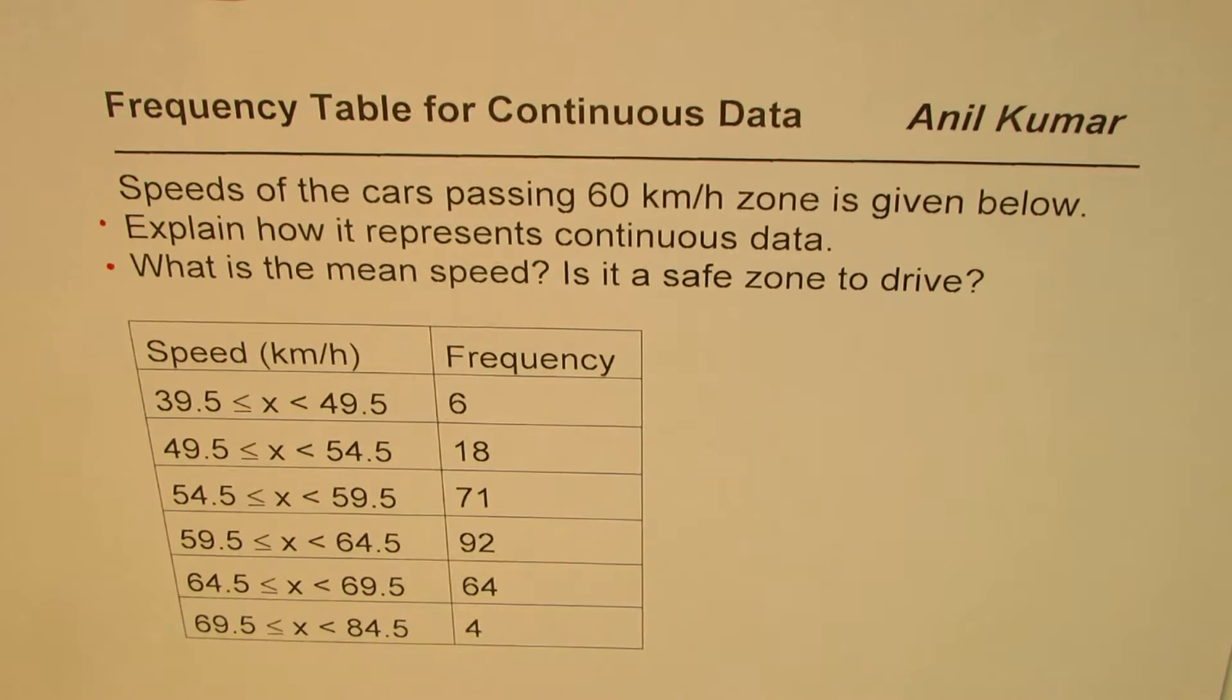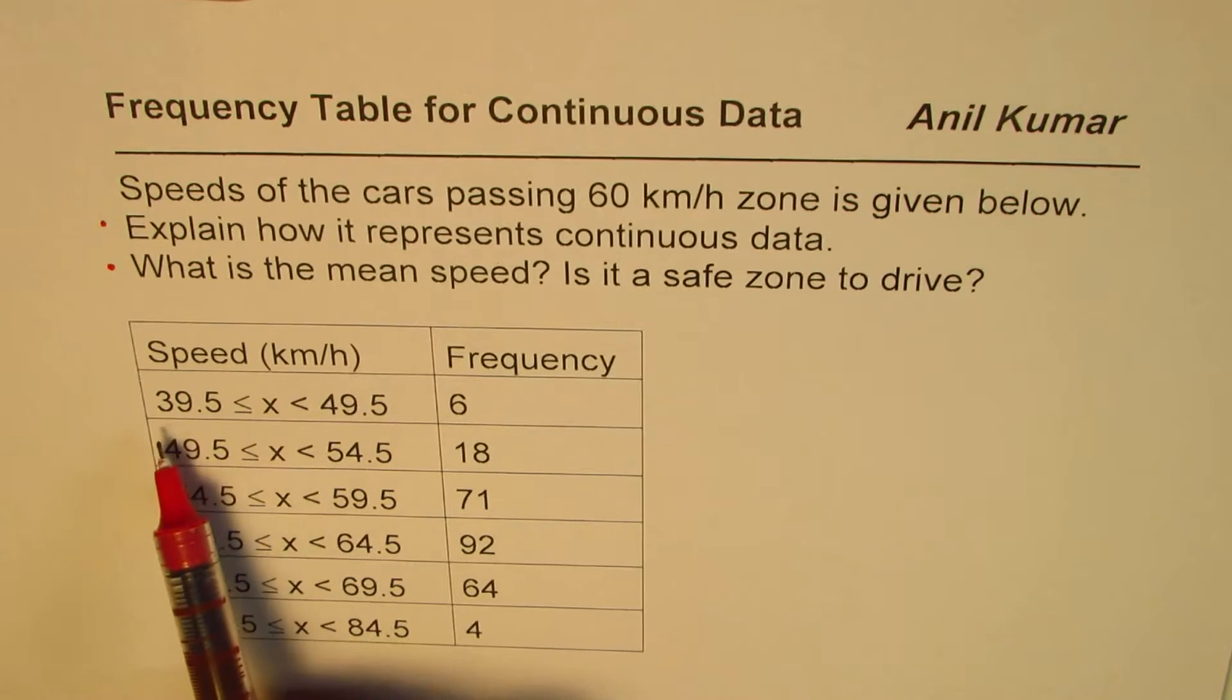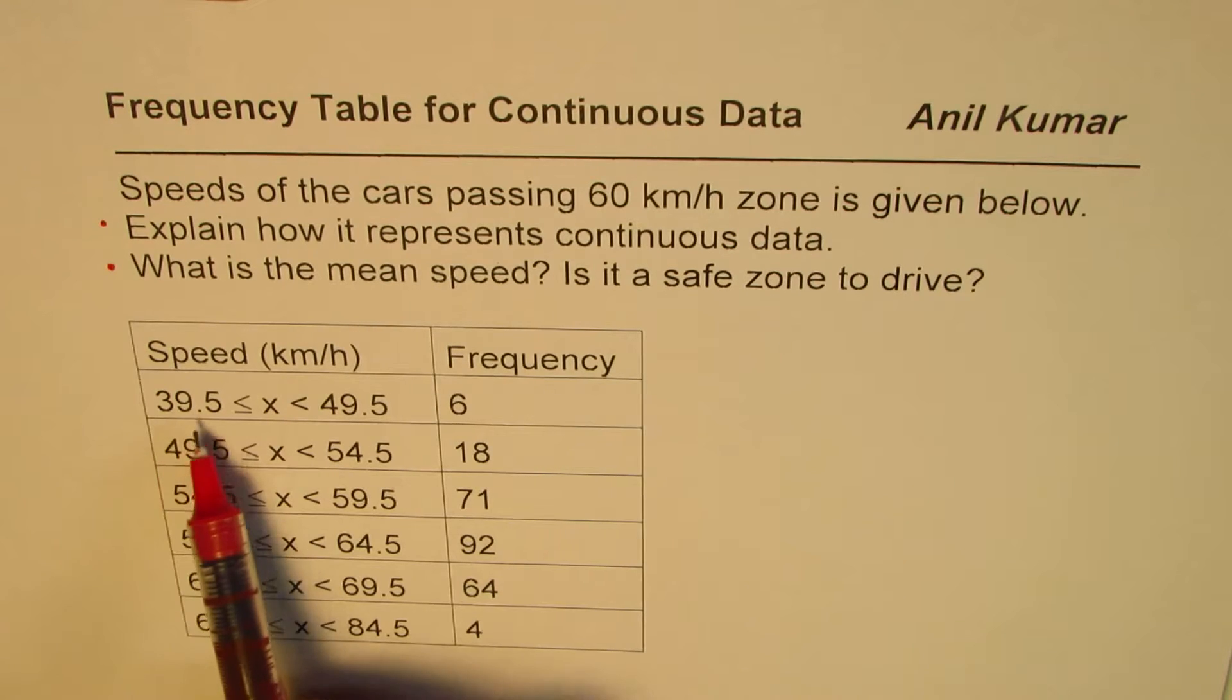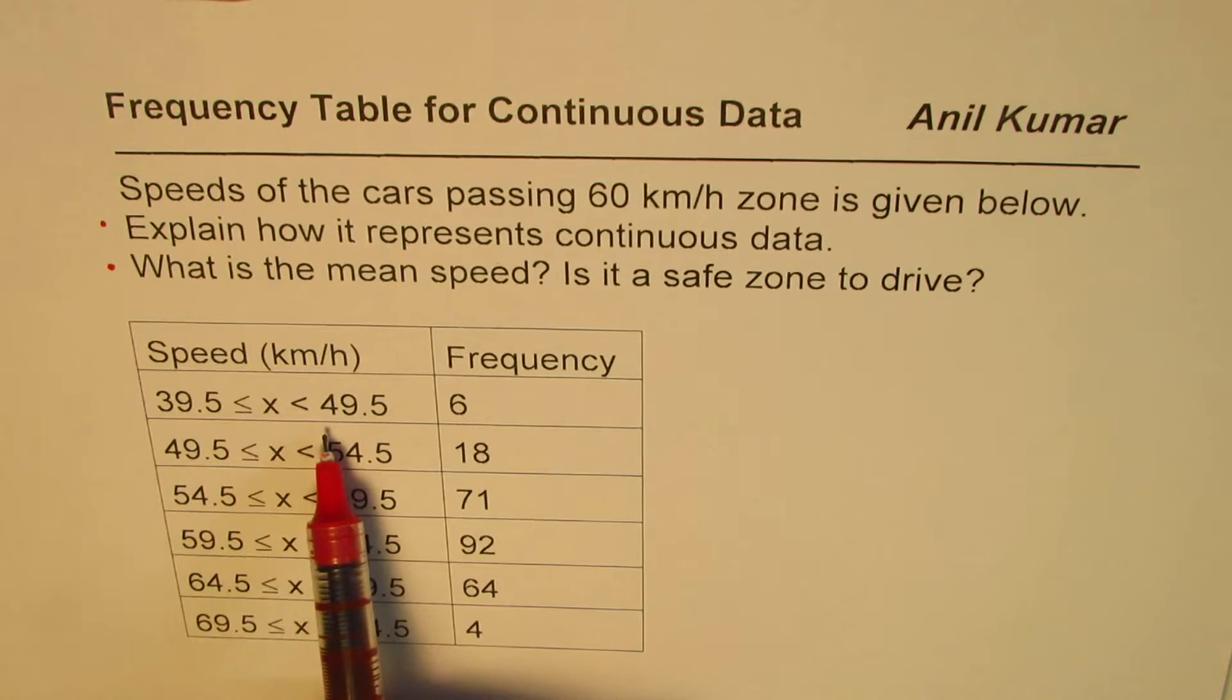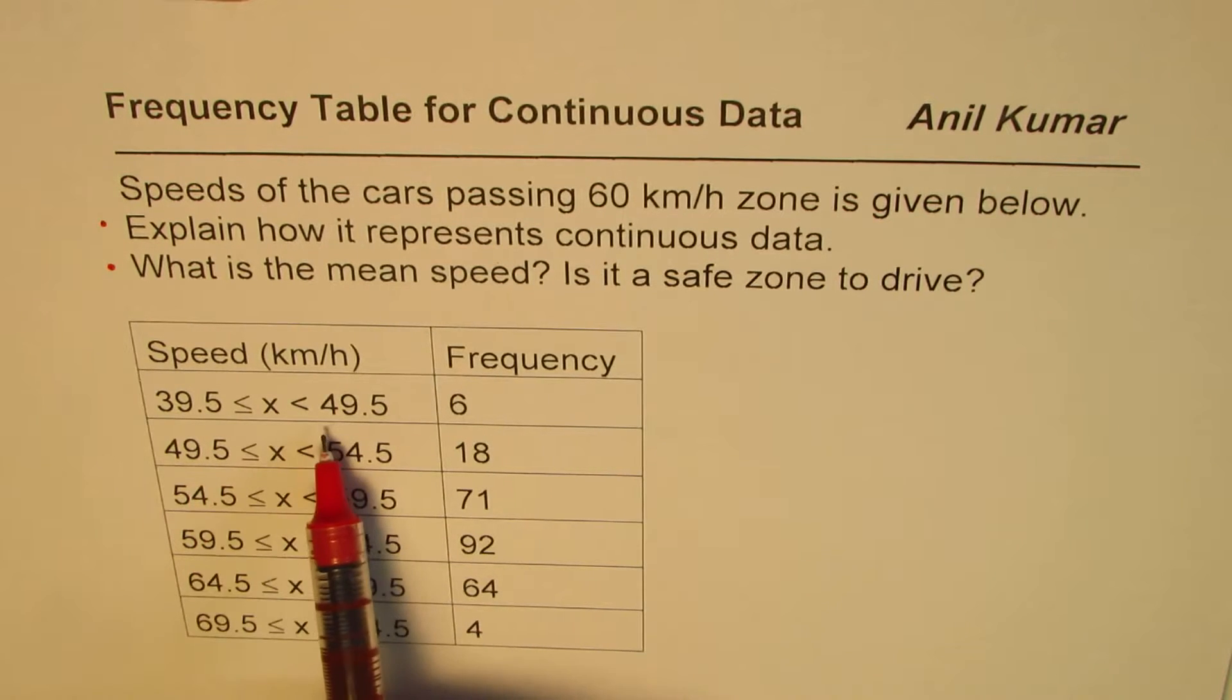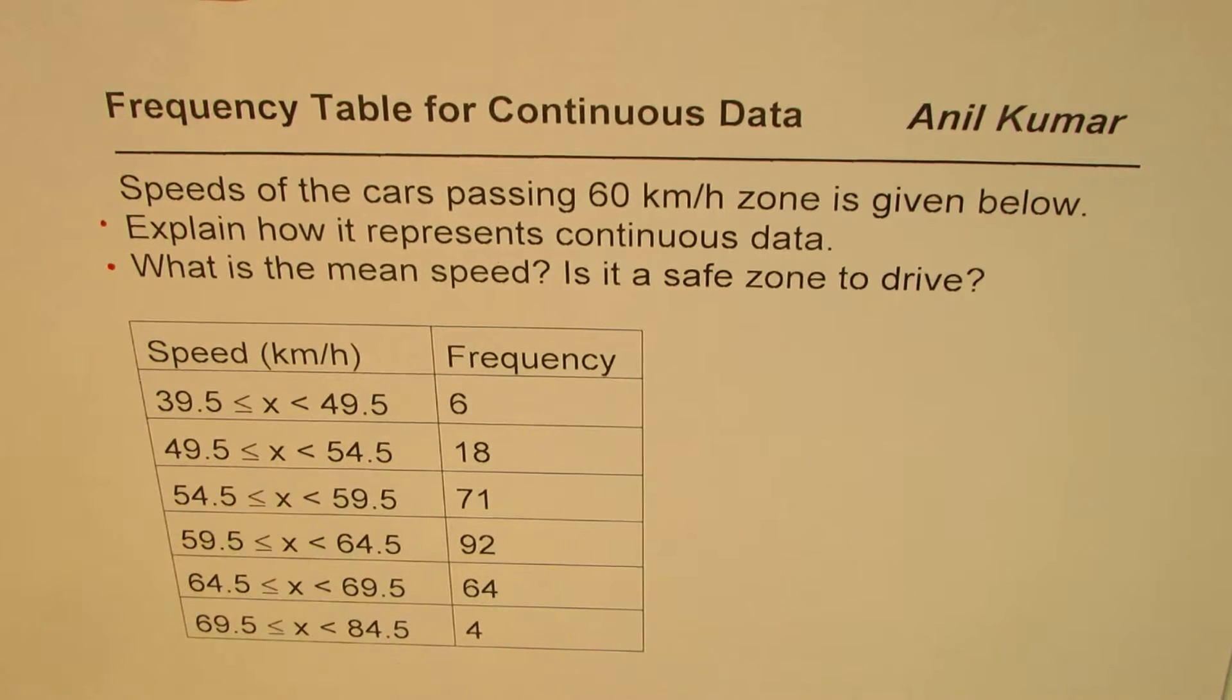The information given is speed in kilometers per hour in different intervals where x is greater than or equal to 39.5 and less than 49.5. The upper limit becomes the lower limit in the next interval, where the lower limit is included but the upper limit is not. For each interval we are given some frequency.